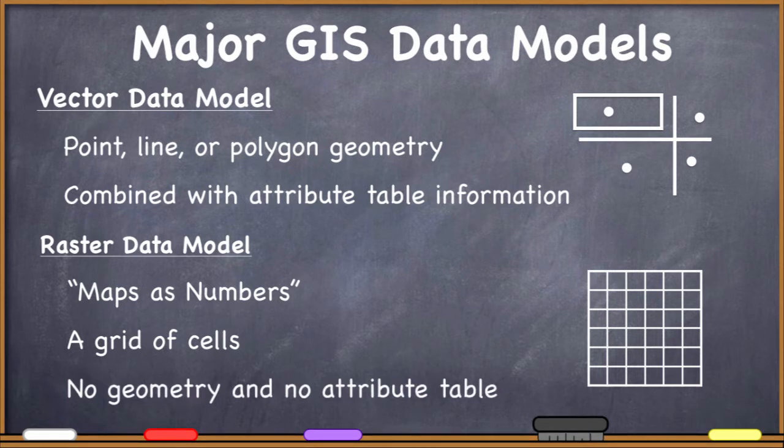In the raster data model, you do not have geometry and you do not have an attribute table. We're not talking about geometry and links to attribute tables here. We're just talking about grids of cells with numbers in them.